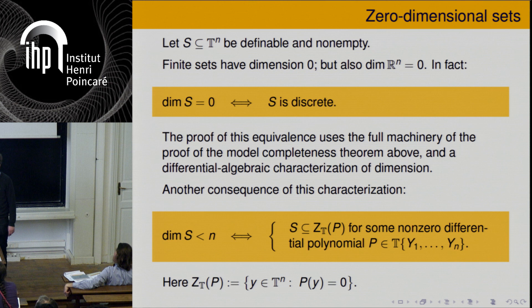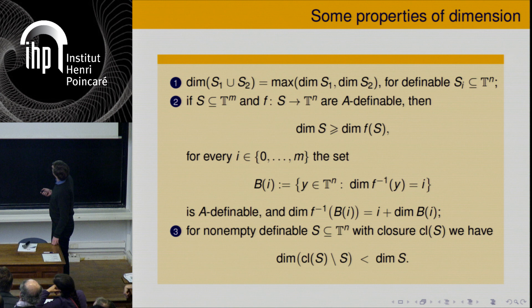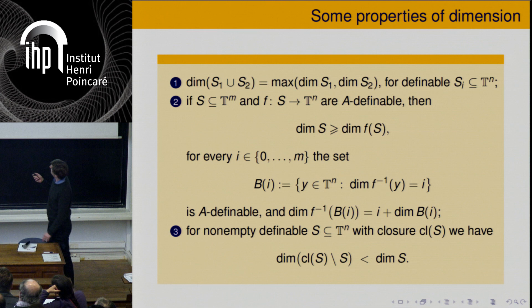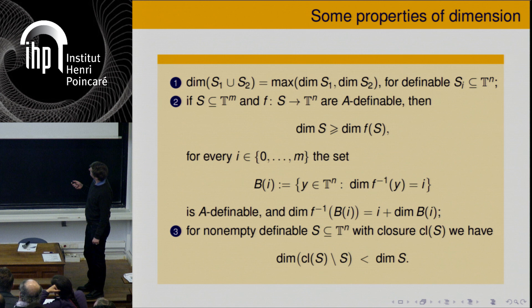If in any ambient space the dimension of S is less than N, this means S can be captured by the zero set of some non-zero differential polynomial. Here are some more properties of dimension. The dimension formula says: if you have a definable map, the dimension of the image cannot be larger than the dimension of the domain S. And if the dimensions of all fibers are constant, you have a formula for the dimension of S. The set of elements y such that the fiber above y has a fixed dimension is definable with the same parameters. Also, the dimension of the frontier of a definable set is strictly smaller than the dimension of S.